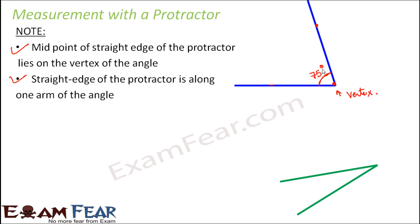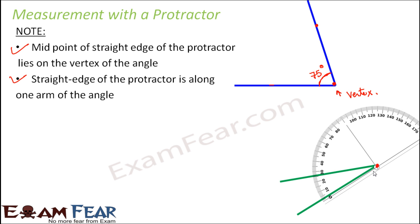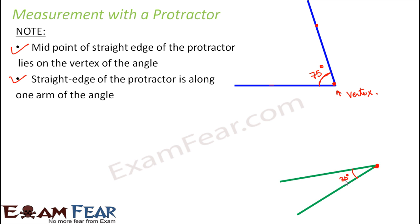Let's take one more example. Given another angle, we place the protractor so that the vertex coincides with the midpoint of the straight edge, and the straight edge lies along one arm of the angle. Starting to count from zero, we see where the other arm falls — it is at 30. So the angle here is 30 degrees. In this fashion, we can find the measurement of angles.